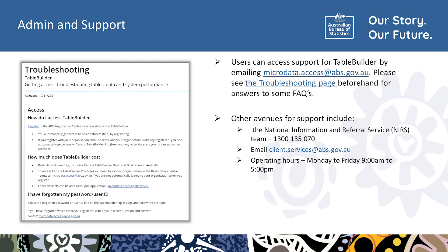Users can access support for TableBuilder by emailing microdata.access@abs.gov.au, but please look at the Troubleshooting page in the TableBuilder section of the ABS website beforehand for answers to some frequently asked questions. Other avenues of support include calling the National Information and Referral Service team or emailing Client Services.